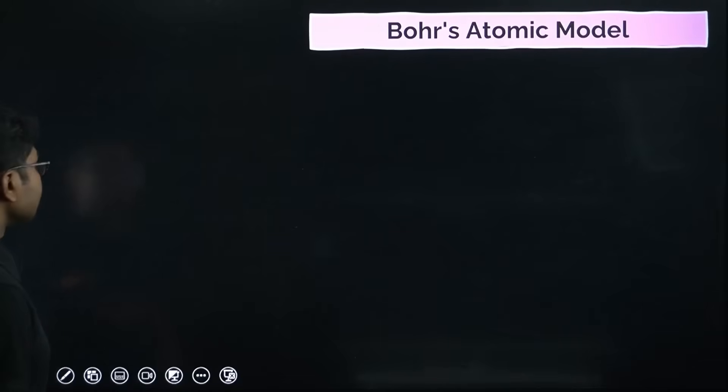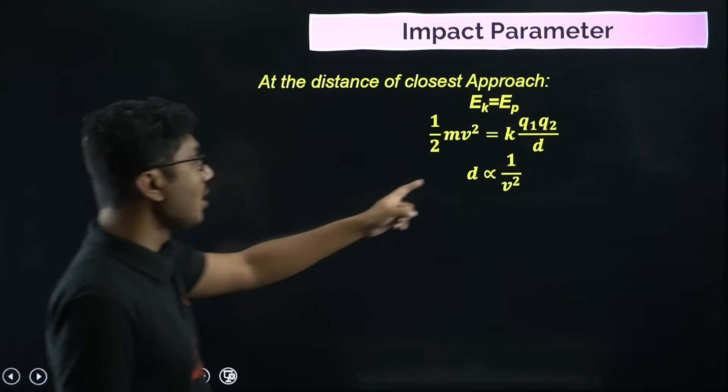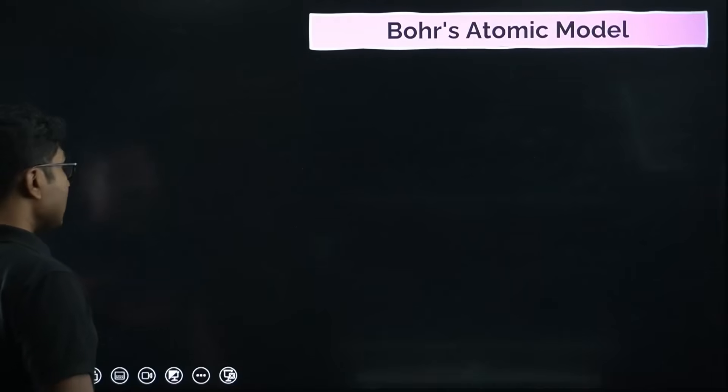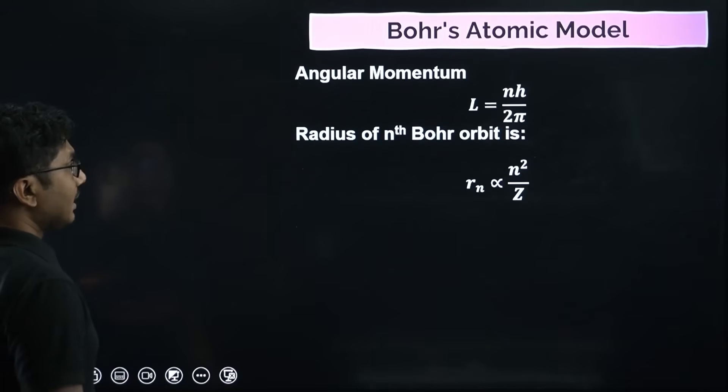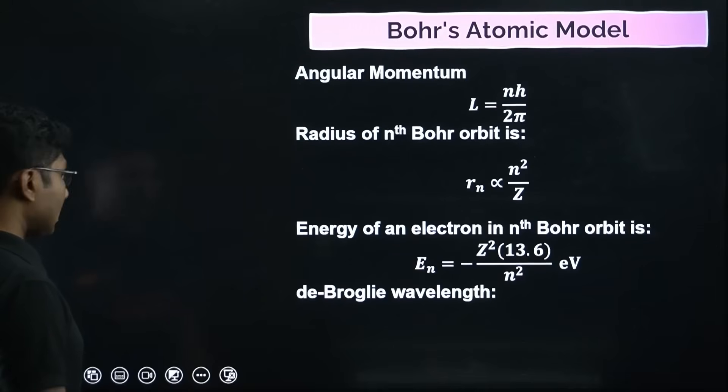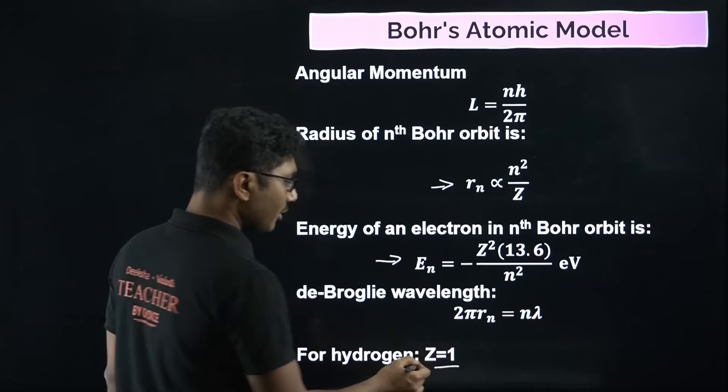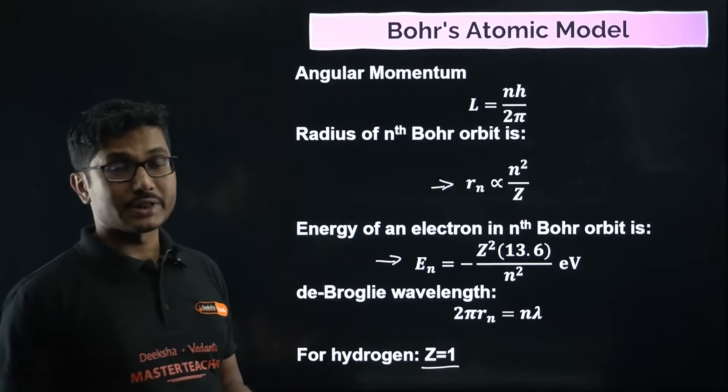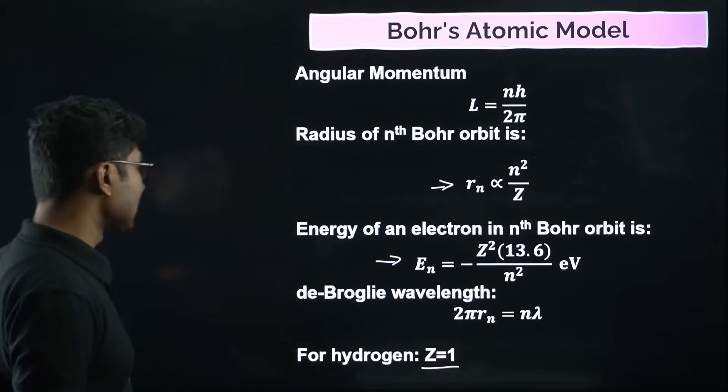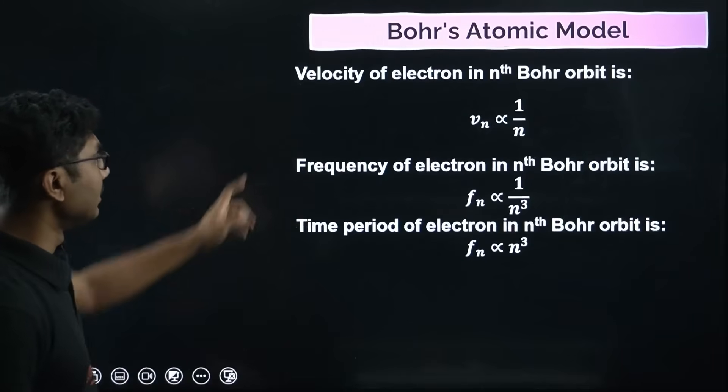Let me show one more chapter from where you see a lot of questions - that is nuclei, atoms and nuclei. In the atoms chapter also, all the gist of the chapter is given. This is the distance of closest approach. Based on that, last year one question came. Distance of closest approach is directly proportional to one upon v squared. Higher the velocity, smaller is the distance of closest approach. All the Bohr's atomic model formulas - here we have r_n proportional to n squared by Z, energy of electron, and also de Broglie wavelength.